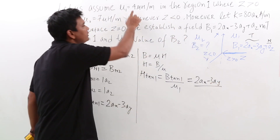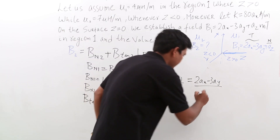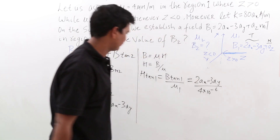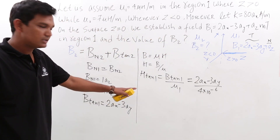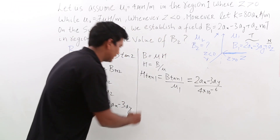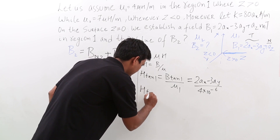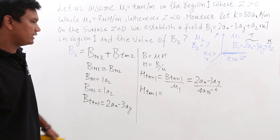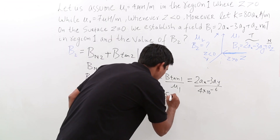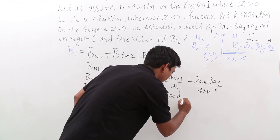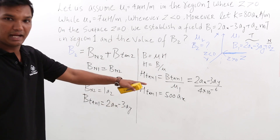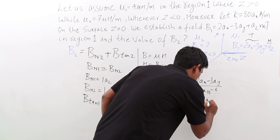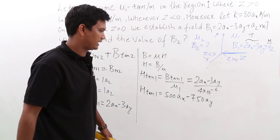Mu 1 is given as 4 microhenry, i.e., 4 × 10^-6 Henry. Dividing B_tan1 by mu1 gives H_tan1 = 500 A_x minus 750 A_y.